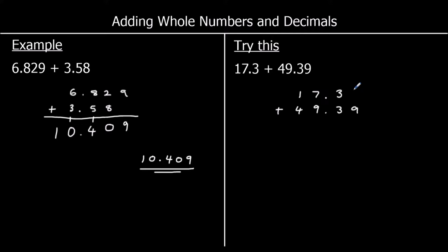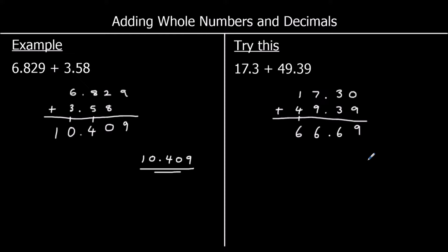17.3 has nothing in the hundredths column, so I can put a zero or leave it. Starting with the smallest column: zero plus nine is nine. Three plus three in the tenths is six. The decimal point stays where it is. Seven plus nine in the ones is 16 — six goes in the ones, one carries to the tens. In the tens I've got 1 plus 4 plus 1, which is 6. So the answer is 66.69.